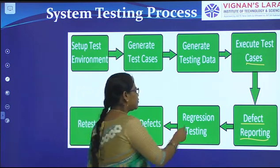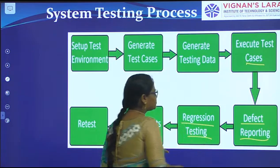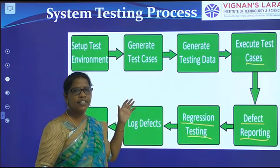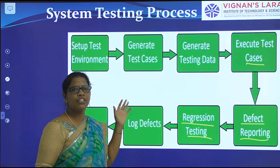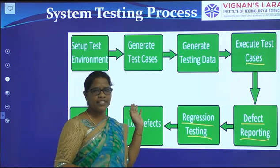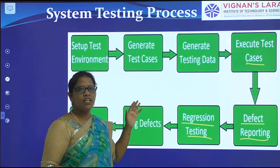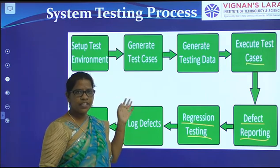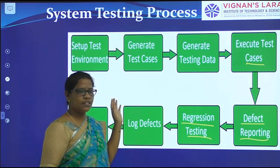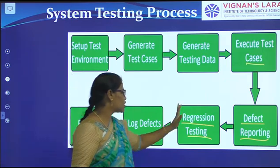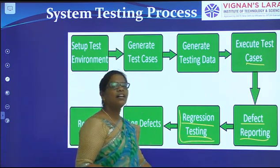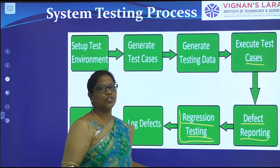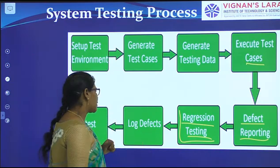After that, we have to do regression testing. In regression testing we have four types of testing, like a smoke test and others. Those tests will be done in regression testing according to the project and according to the software they are developing.